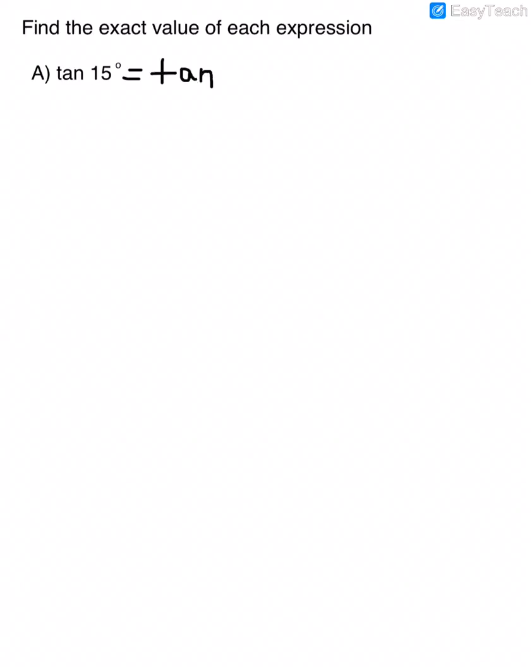Find the exact value of each expression. The first example asks us to find the tangent of 15 degrees. We don't know what the tangent of 15 degrees is, but we do know what the tangent of 30 degrees is, and we can write it as the tangent of 30 divided by 2, because that equals the tangent of 15 degrees. Writing it this way allows us to use the half angle identities.